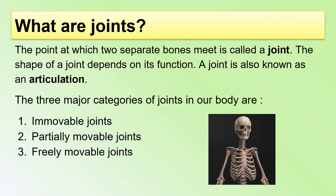The point at which two separate bones meet is called a joint. The shape of a joint depends on its function. A joint is also known as an articulation. The three major categories of joints in our body are immovable joints, partially movable joints, and freely movable joints.